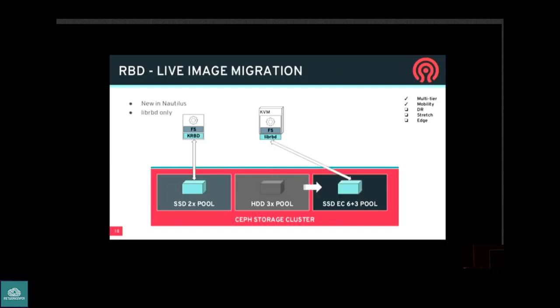In Nautilus, there's a new feature called RBD Live Migration that allows an in-use image — for example a running VM consuming a block device — to be live migrated from one tier of storage to another without interrupting or restarting the VM. You've always been able to live migrate a VM to another machine using the same storage, but now you can also move storage to a new performance tier while the VM is still running. That gives you multi-tier capability and mobility within the same Ceph cluster.